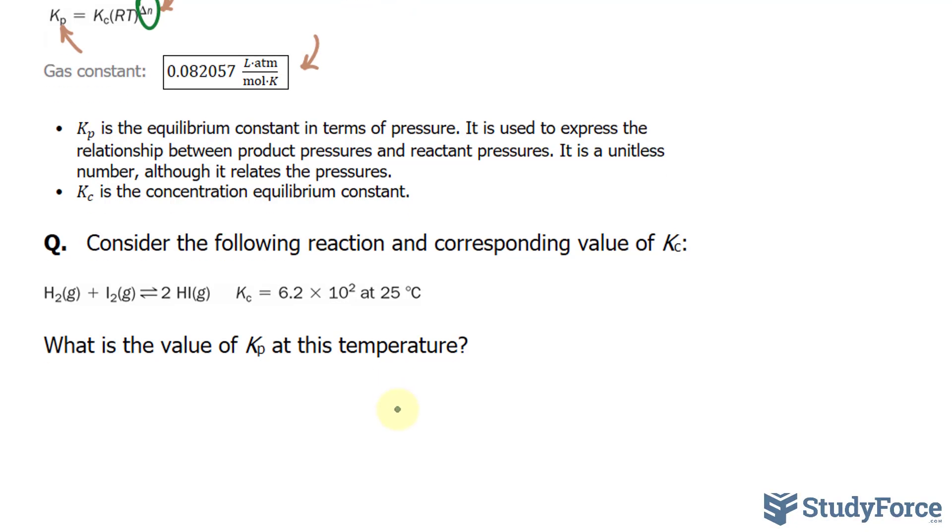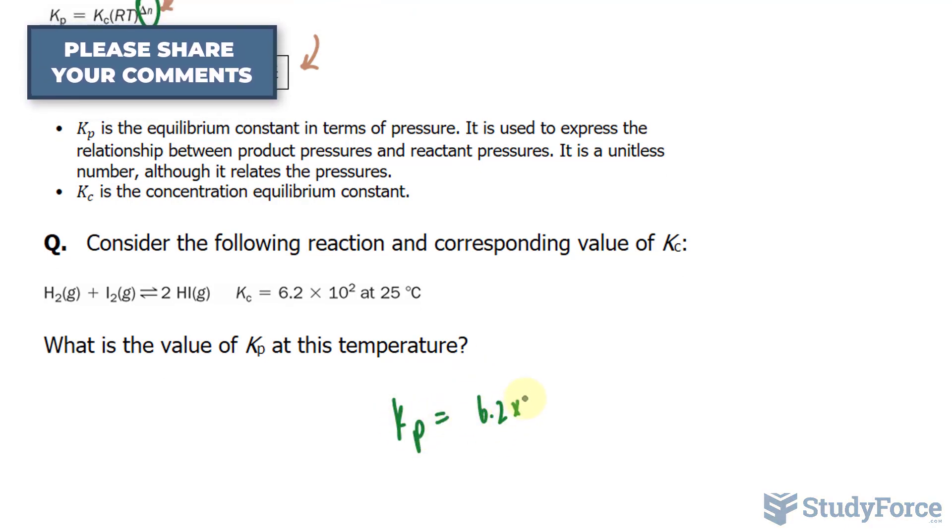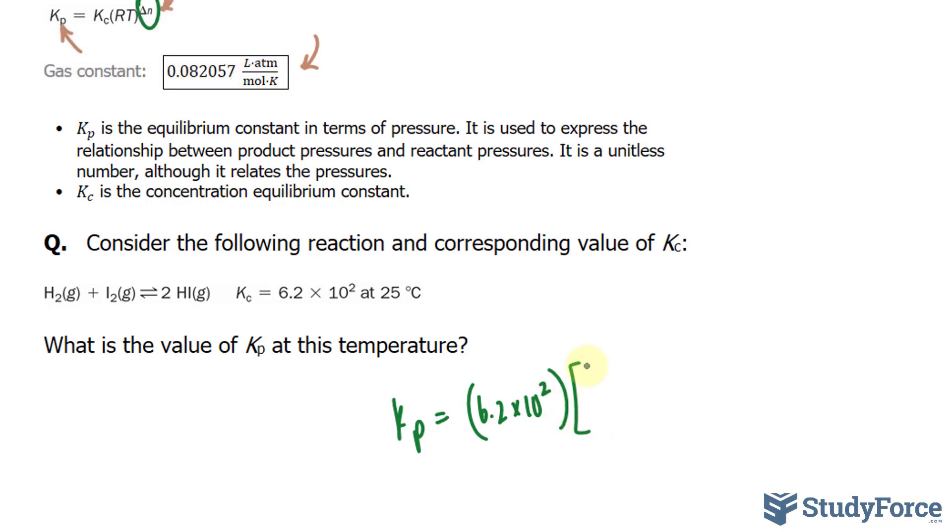Let's do the exact same thing as before. This time we're looking for Kp. Kc is given as 6.2 times 10 to the power of 2. And we'll multiply this by the gas constant of 0.082057. Multiply it to 298, again, at 25 degrees. And we'll raise this to, we have 2 minus 2. We'll raise it to a delta N of 0. Anything raised to the power of 0 is 1.